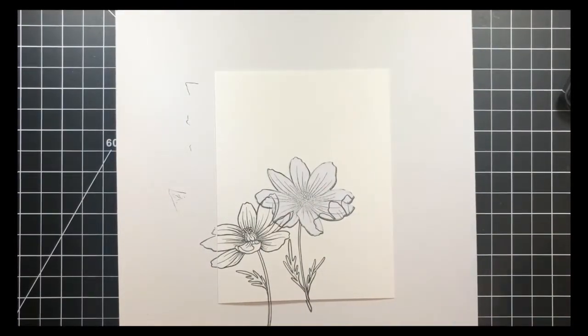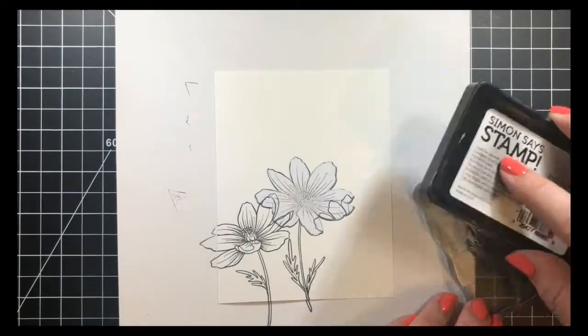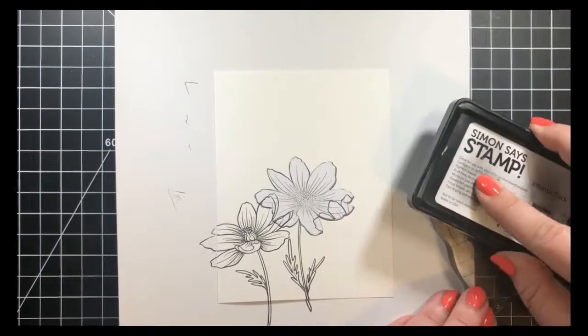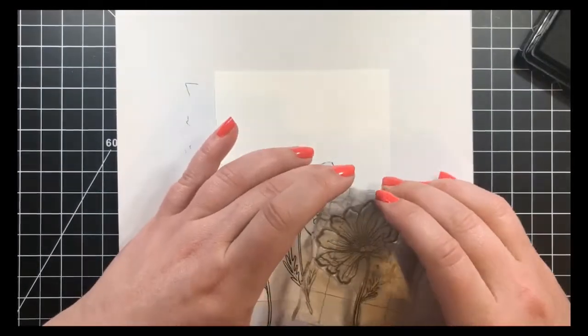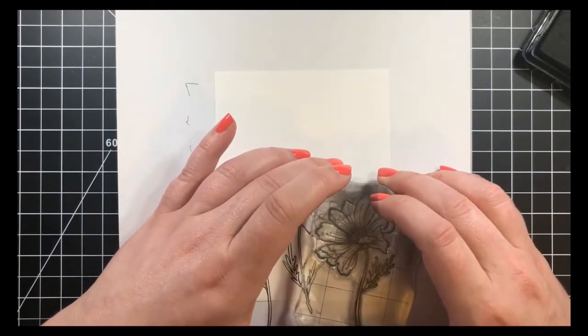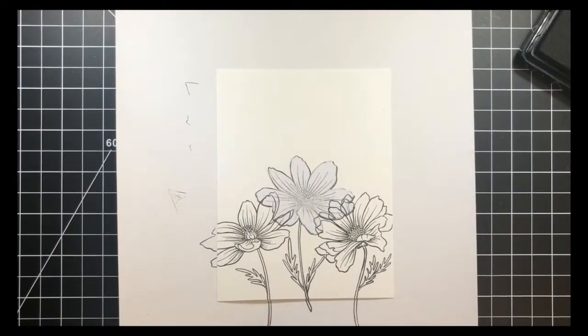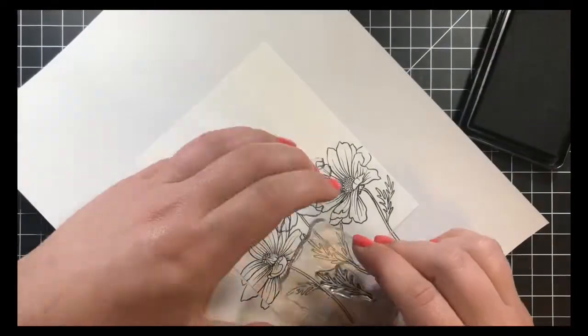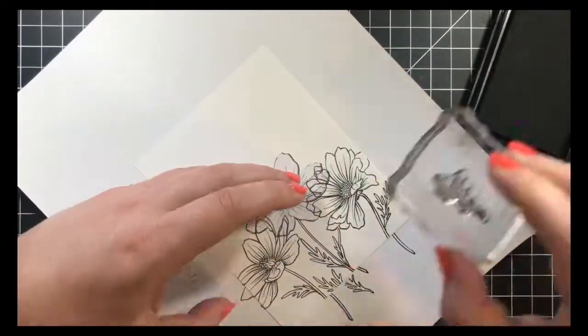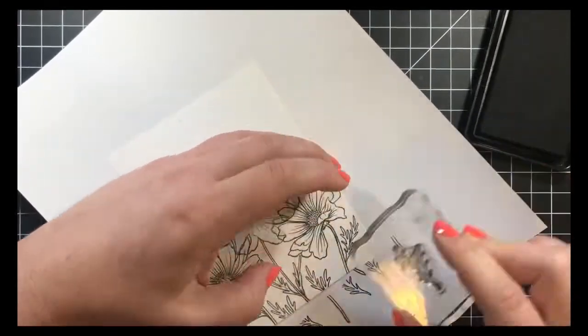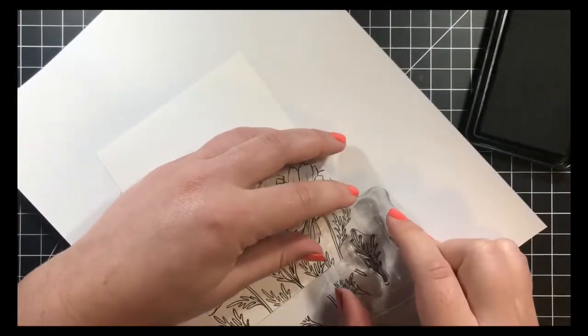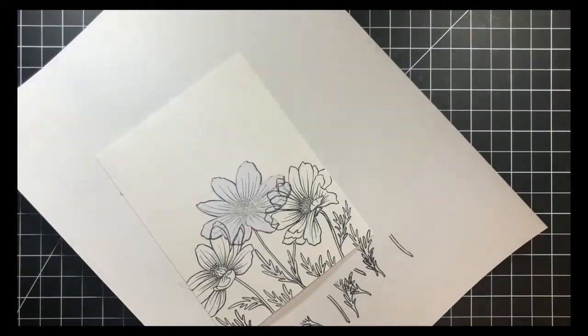I stamped both of the other flowers on either side of that middle one. Then there are a couple of leaf stamps in the set, and I just took one of those and stamped a few on the bottom, kind of hanging off the bottom of the card just to fill in some of those white areas. And then we'll move on to our Copic coloring.